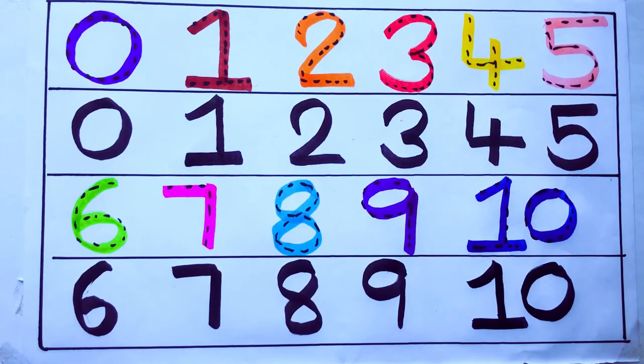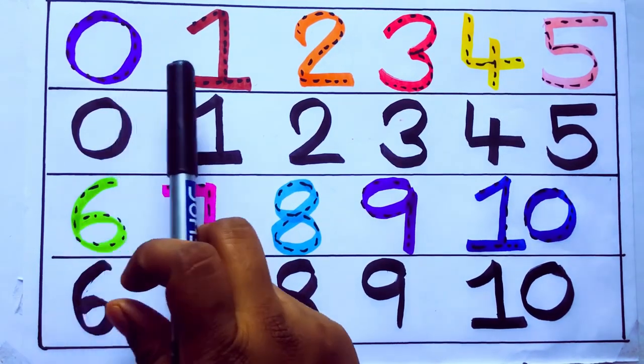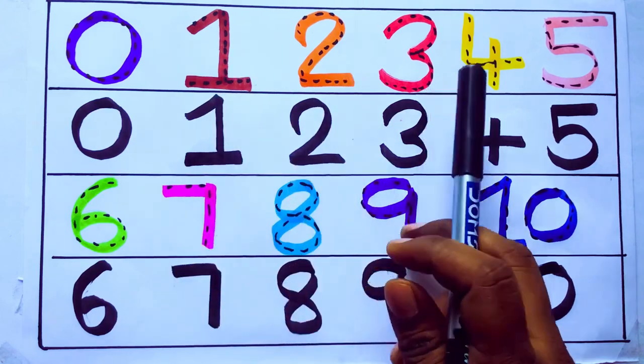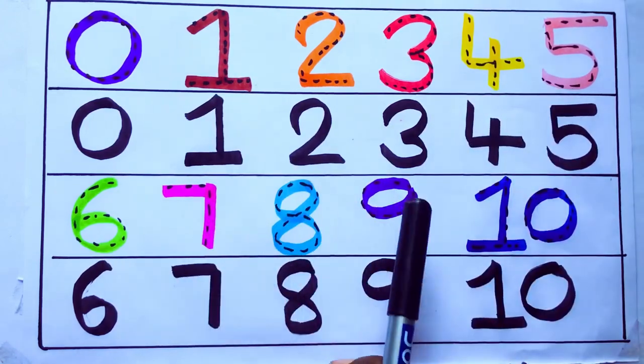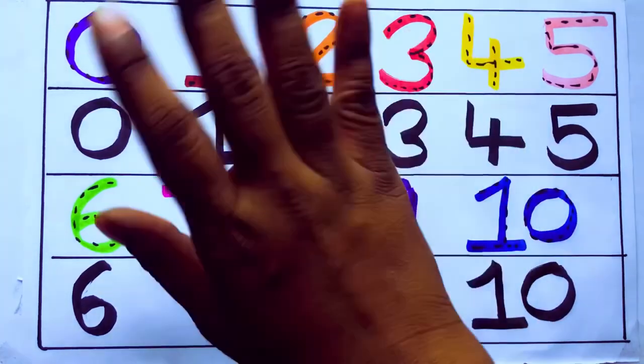One second learning numbers: 0, 1, 2, 3, 4, 5, 6, 7, 8, 9, 10. Ok, bye kids.